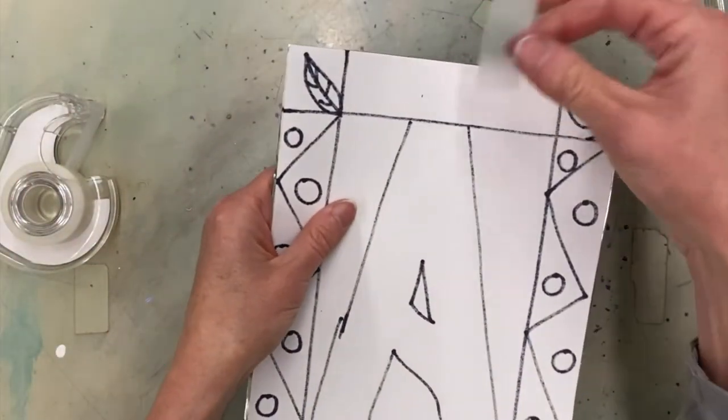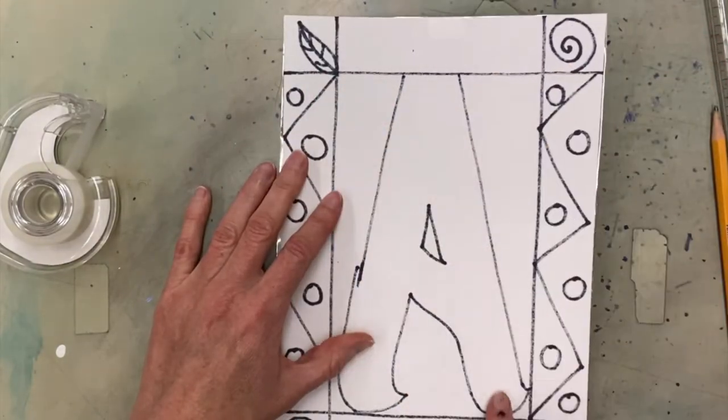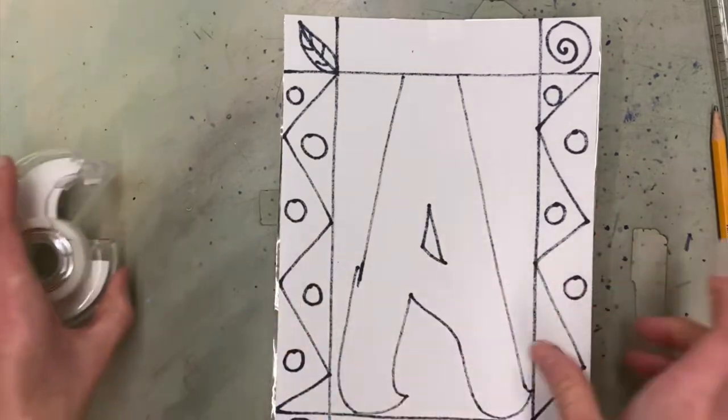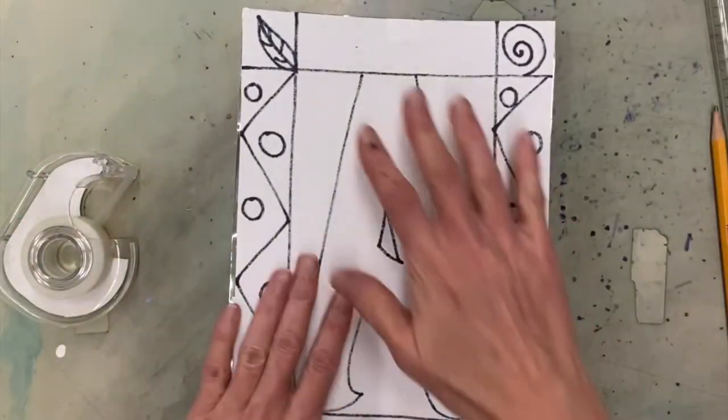I'm just going to flip this over. I always tell kids try to put the tape somewhere where they're not going to carve some of their design but it really doesn't matter. There. So now this isn't going to move.